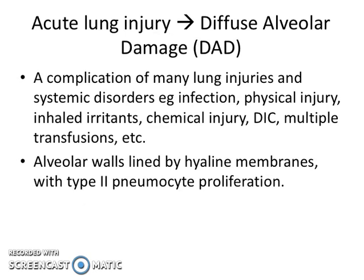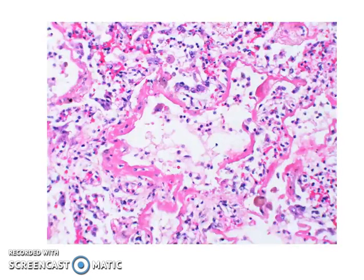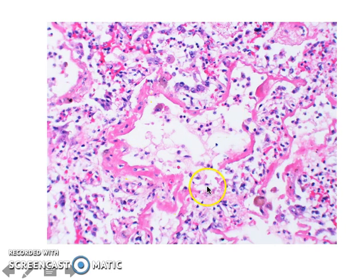Acute lung injury can give rise to diffuse alveolar damage, or DAD. It is a complication of many lung injuries and systemic disorders. Characteristically, the alveolar walls will be lined histologically by hyaline membranes with type 2 pneumocyte proliferation. The images show alveoli lined by hyaline membranes with some infiltration by inflammatory cells.